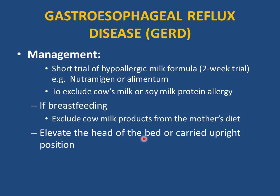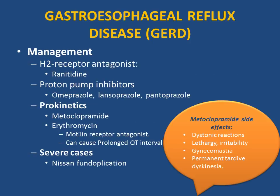Parents can be advised to elevate the head of the bed or carry the child upright after each feed. Medications for GERD include H2 receptor antagonists (e.g., ranitidine) and proton pump inhibitors (e.g., omeprazole, lansoprazole, pantoprazole) — used for at least four weeks. Prokinetics such as metoclopramide and erythromycin stimulate rapid gastric emptying. Know metoclopramide's side effects: dystonic reactions, lethargy, irritability, gynecomastia, and permanent tardive dyskinesia. Erythromycin can cause prolonged QT interval.